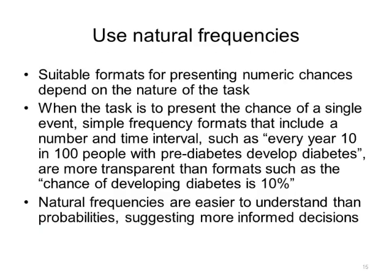Another best practice is to use natural frequencies. Suitable formats for presenting numeric chances depend on the nature of the task. When the task is to present the chance of a single event, simple frequency formats that include a number and time interval, such as 'every year 10 in 100 people with prediabetes develop diabetes,' are more transparent than formats such as 'the chance of developing diabetes is 10%.' Simply saying 10% is problematic because it does not specify the time span nor the denominator. There is good evidence to show that clinicians and patients alike find natural frequencies easier to understand than probabilities, suggesting that decisions based on frequencies are more informed than those based on probabilities. There is also growing evidence to support the use of icon arrays to present natural frequencies, with evidence suggesting that these are well understood and that they effectively support communication about individual statistics.